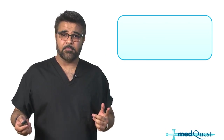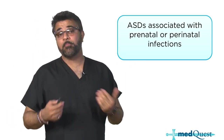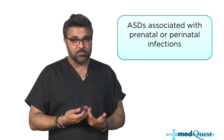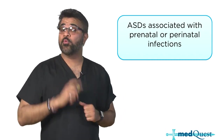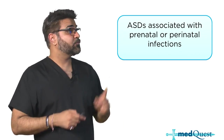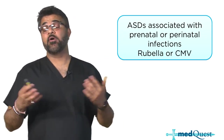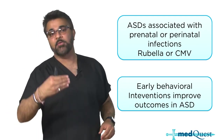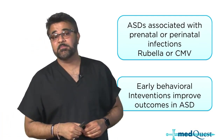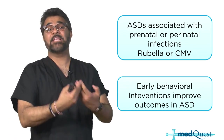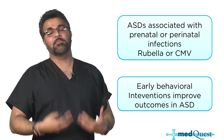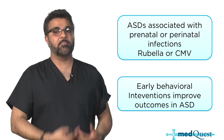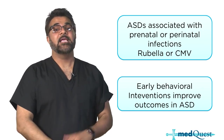Is there an association between autism spectrum disorders and infections? Yes - prenatal or perinatal infections have been shown to be associated, specifically rubella or CMV, which are part of the TORCH infection family. Remember, early behavioral interventions actually improve outcomes in autism spectrum disorder. So diagnosing the child early, getting involved with genetic counseling, behavioral therapy, and medications if needed can help them overcome some of their barriers.